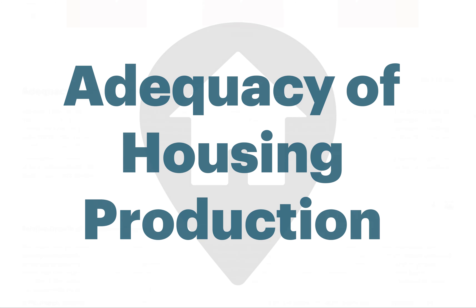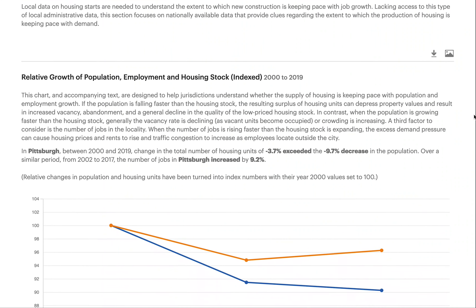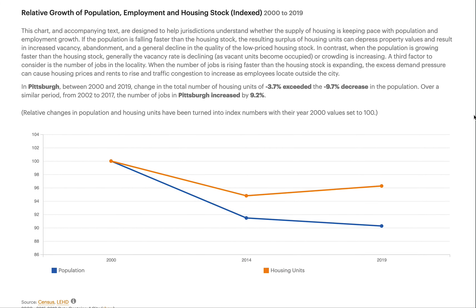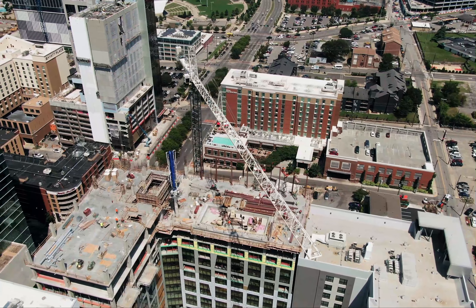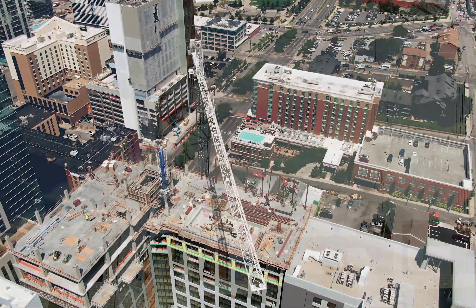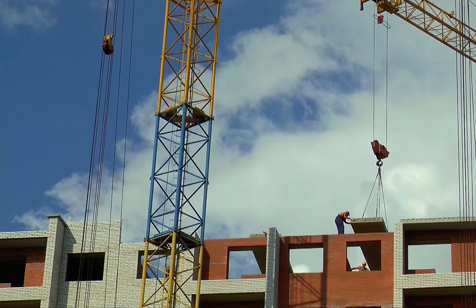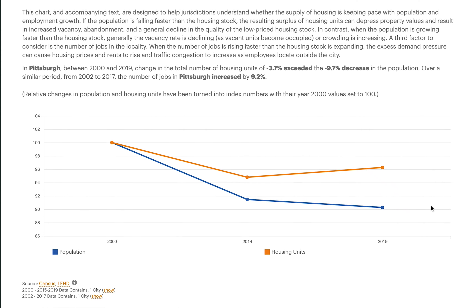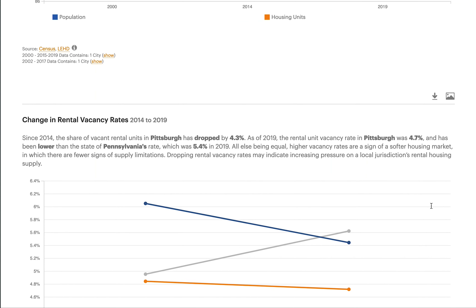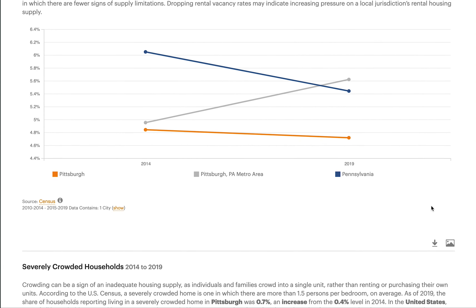The adequacy of housing production section is designed to help jurisdictions understand whether the supply of housing is keeping pace with population and employment growth. Lacking access to local administrative data on housing starts, this section focuses on nationally available data that provide clues regarding the extent to which production of housing is keeping pace with demand, by analyzing changes in housing vacancy rates and overcrowding.